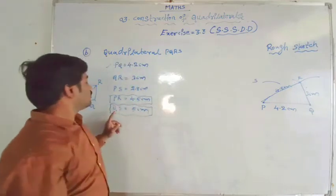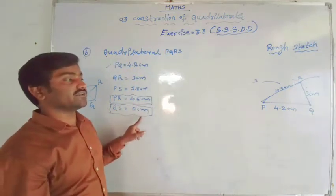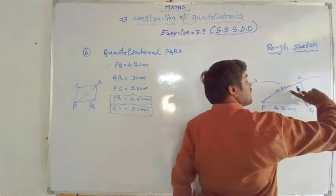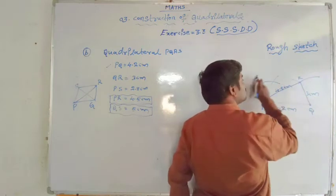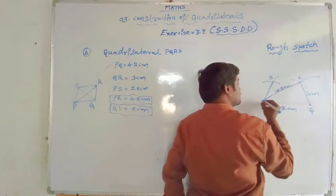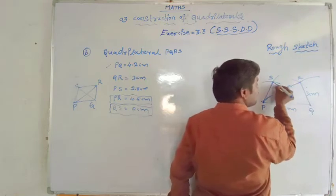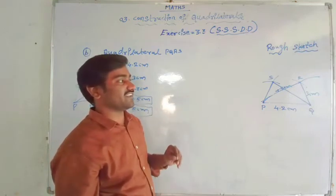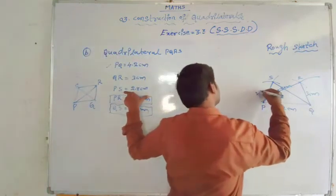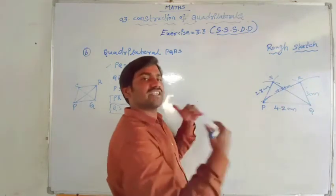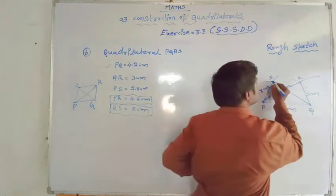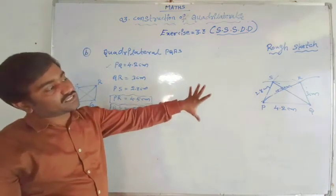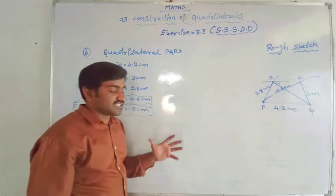We don't know the exact position of S yet. QS equal to 5 cm is a diagonal - we have Q, so take a radius of 5 cm on the compass and draw an arc from Q. We get the exact position of S here. Just join PS and QS. The 4th side is not given - only 3 sides are given - but to make a complete construction we have to join the remaining two vertices. The rough sketch is completed.